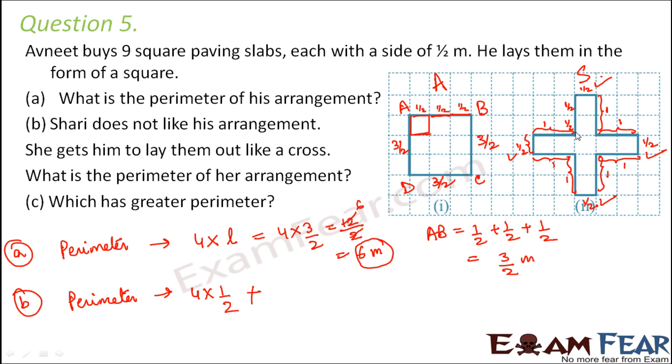Now how many sides do you have of length 1? This is 1, 2, 3, 4, 5, 6, 7 and 8. So you have 8 such sides whose length is 1. So 8 into 1. So now you have covered all of them.